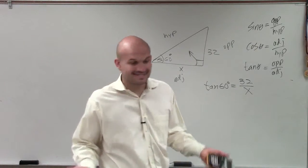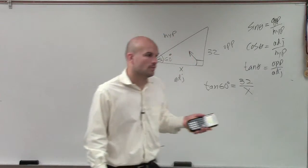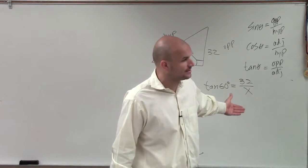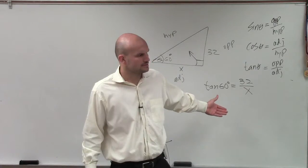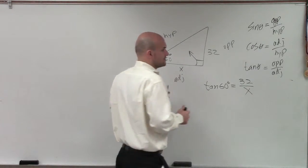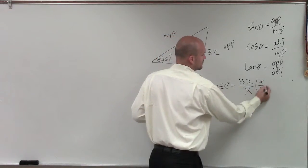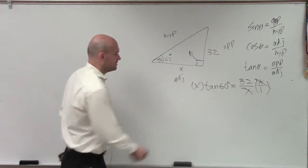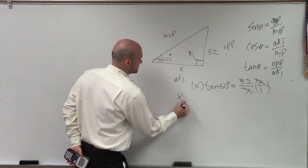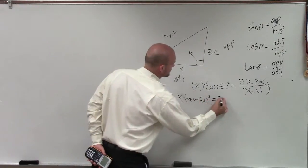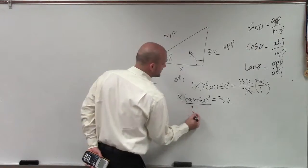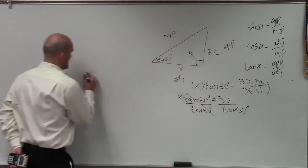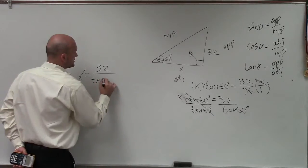The question is asking us to find the value of x. You can't just plug that into your calculator, so we need to get x off the bottom — x cannot be in the denominator. To solve for x, I'm going to multiply by x on both sides. Those divide to 1, giving us x times tan(60°) equals 32. Then divide both sides by tangent of 60 degrees, so x equals 32 divided by tan(60°).